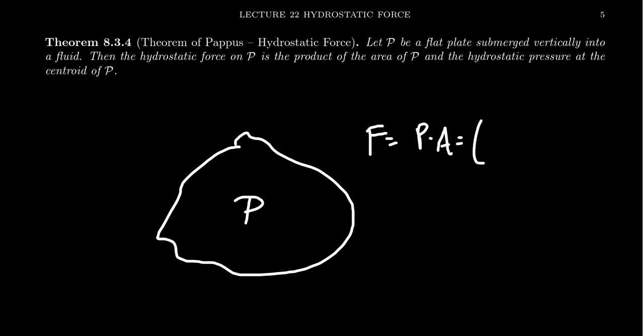So what's going to happen is we're going to take the pressure at the centroid, the center of mass of our region here, and then we're going to multiply that by the area of the plate. If you multiply the area of the plate by the pressure at the centroid, this gives you the hydrostatic force.